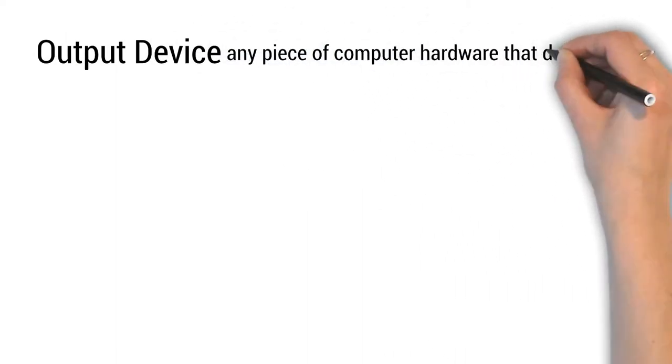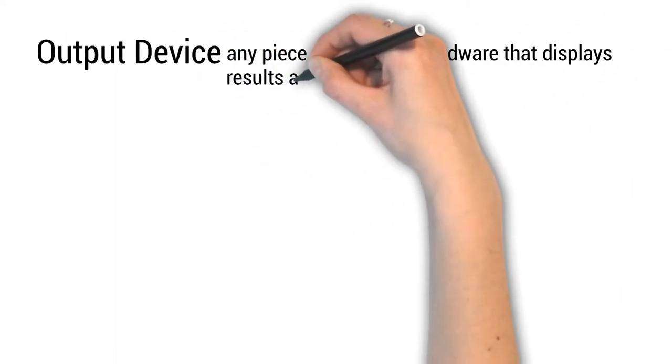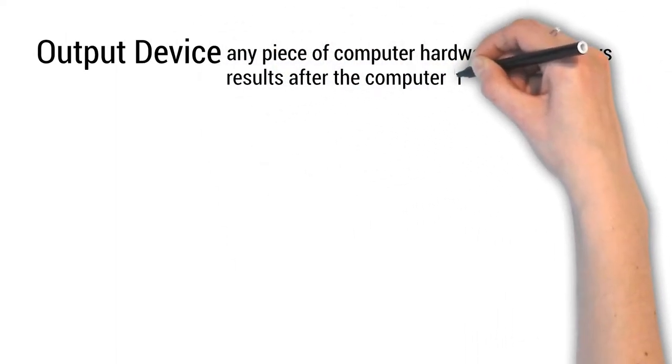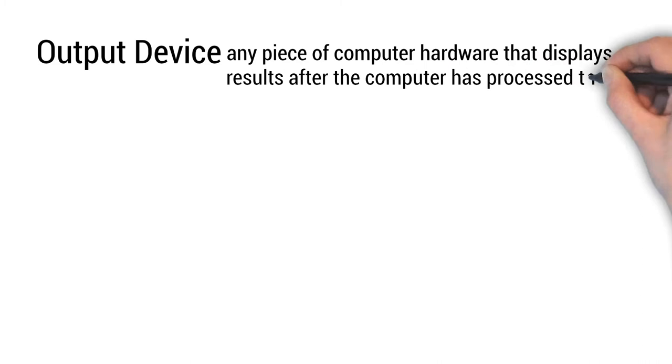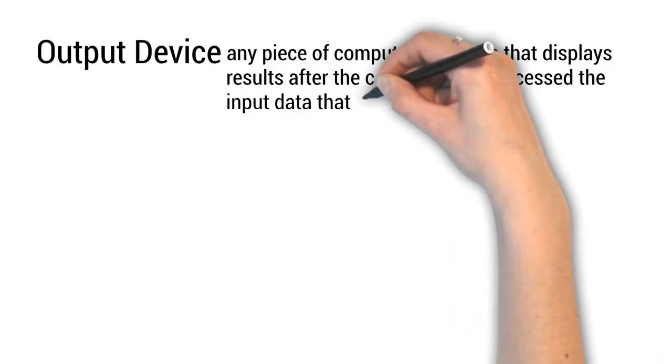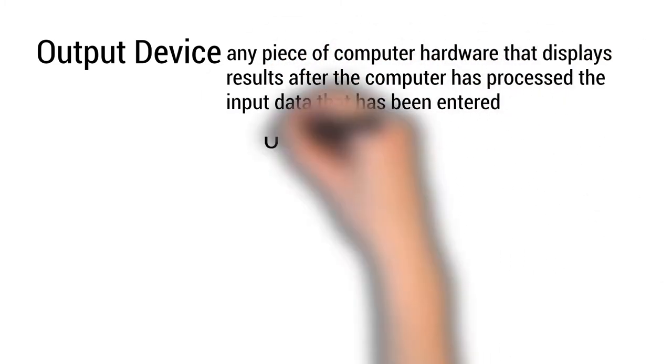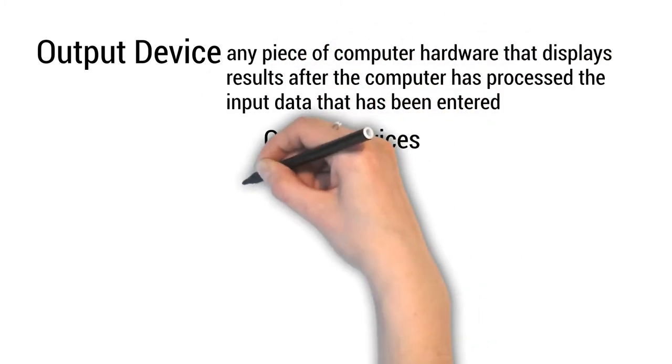Output Device: Any piece of computer hardware that displays results after the computer has processed the input data that has been entered.